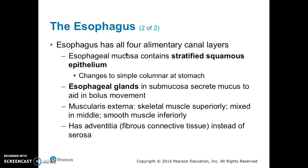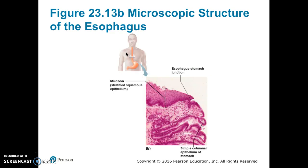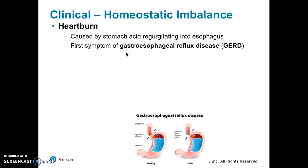Here we see a cross-section of the esophagus. The lumen is collapsed, the mucosa is stratified squamous, the submucosa is areolar connective tissue, and it has both circular and longitudinal layers of muscularis externa. The adventitia is the outermost fibrous connective tissue. Microscopically, we can see the stratified squamous epithelium of the esophagus ending and the simple columnar epithelium of the stomach beginning on this slide.